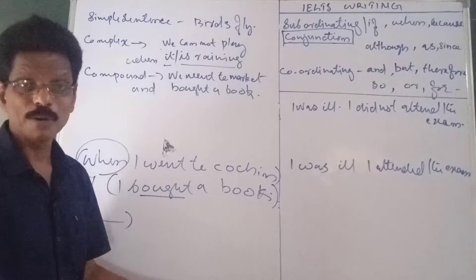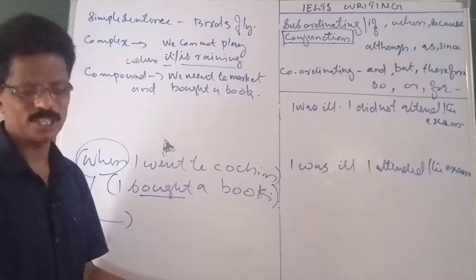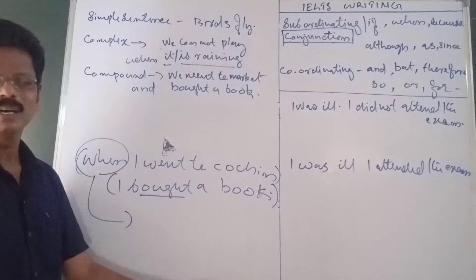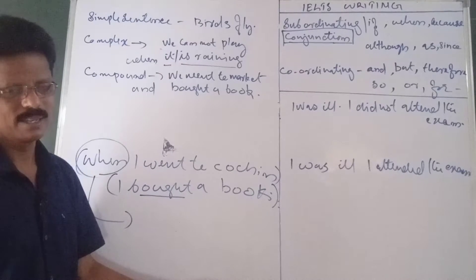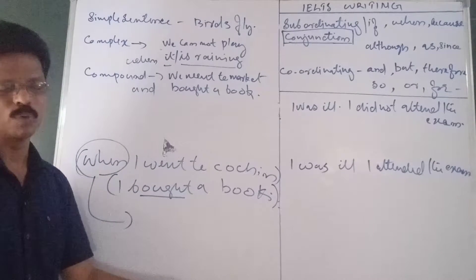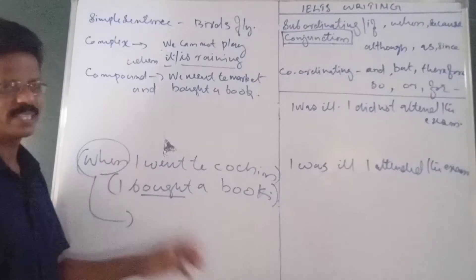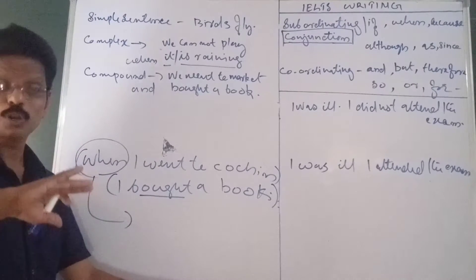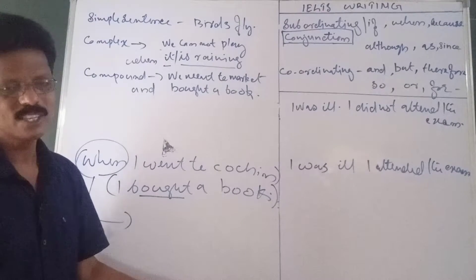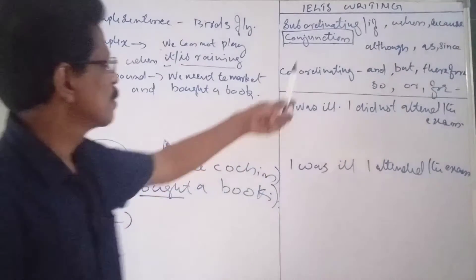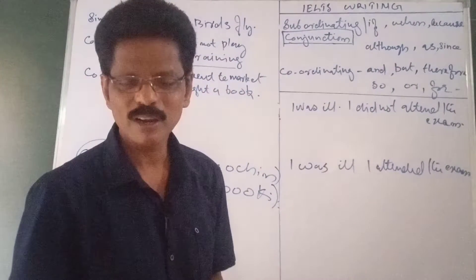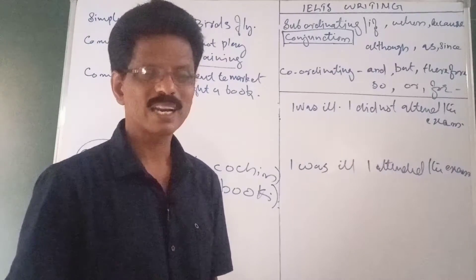What kind of conjunction? A subordinating conjunction. Conjunctions are of four types: subordinating, co-ordinating, co-relative, and compound. Here we study the subordinating conjunction — it connects or joins a subordinate clause to a main clause. Some examples of subordinating conjunctions: 'if' — as in 'If you work hard, you can get first rank.'